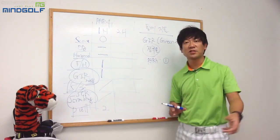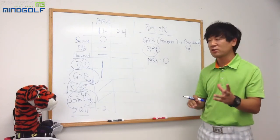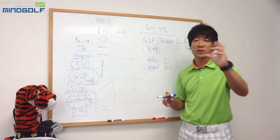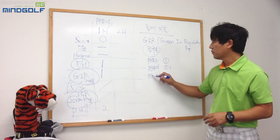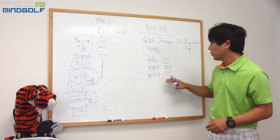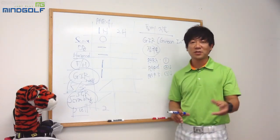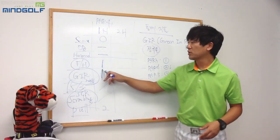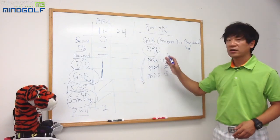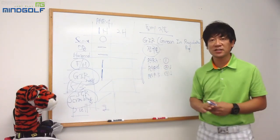파3는 티샷을 그린에 올리는 걸 목적으로 하는 홀이기 때문에 한 번에 그린에 올라갔으면 G.I.R.을 했다고 합니다. 파4 같은 경우는 두 번 이하의 샷으로 그린에 올라가는 것이 정규온이고, 파5 같은 경우는 세 번 이하로 그린에 올라간 것을 정규온이라고 합니다. 즉 파5는 세 번째 샷, 파4는 두 번째 샷이 그린에 올라가는 것이 G.I.R.입니다. 페어웨이 히트는 티샷의 정확도를 보는 지표이고, G.I.R.은 아이언 또는 하이브리드·우드 같은 세컨샷이나 서드샷의 정확도를 보는 지표입니다.